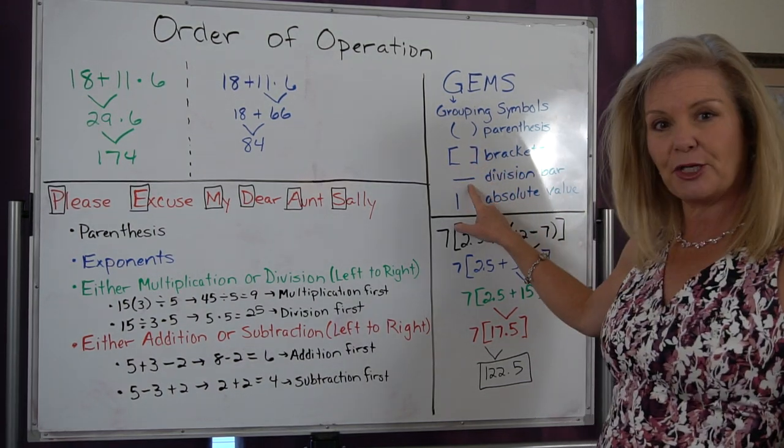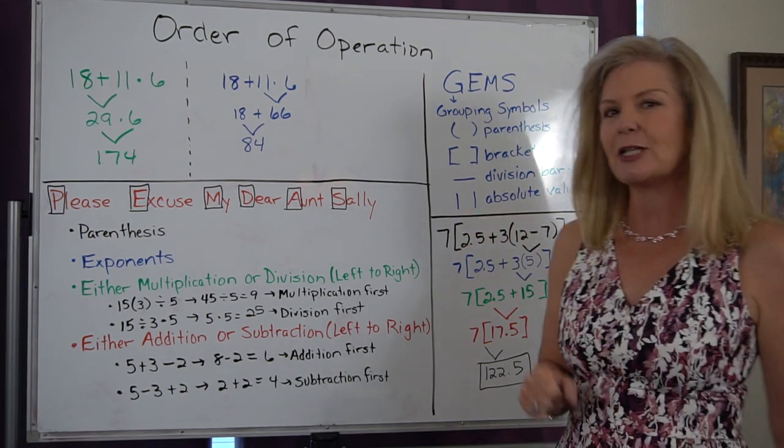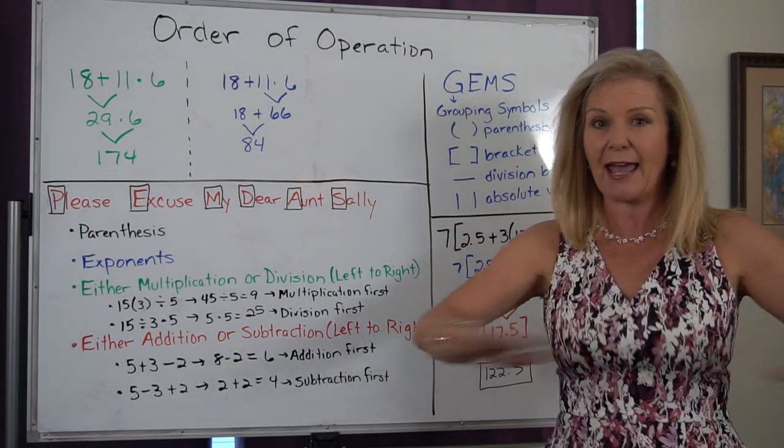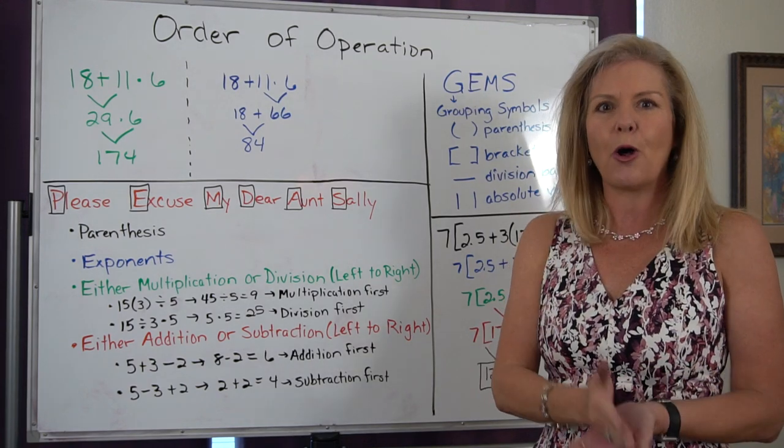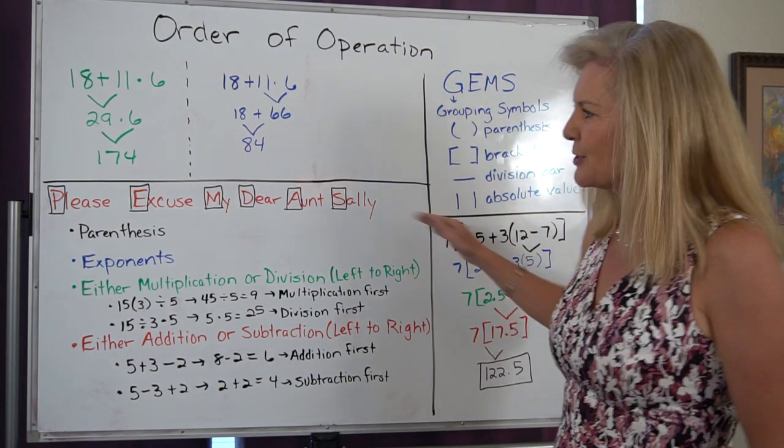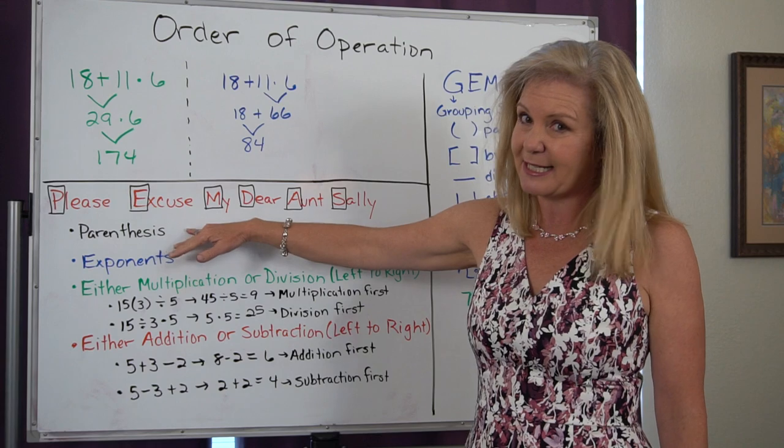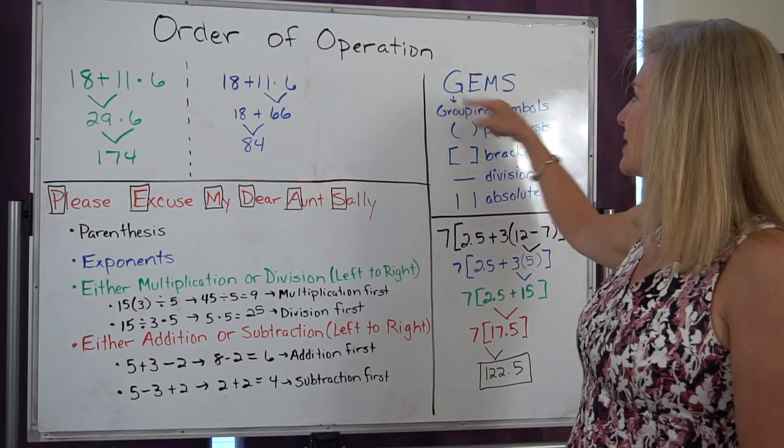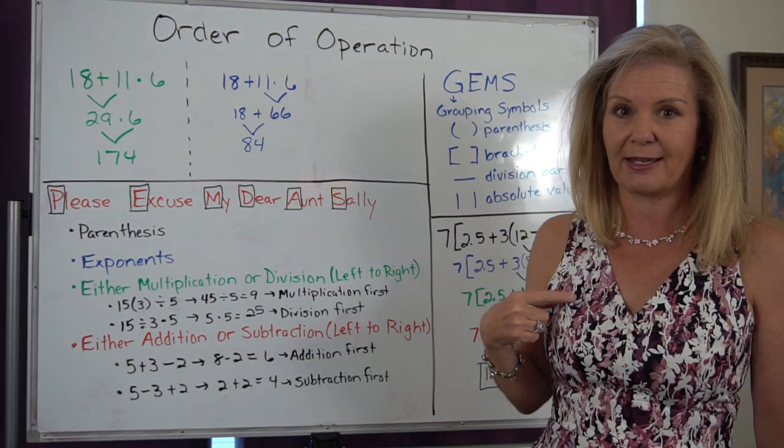We can have parentheses, but we can also have brackets. We can have the division bar and we can have something called absolute value. And if you ever see any of those symbols, you always have to do them first. So I've replaced Please Excuse My Dear Aunt Sally with GEMS, just so we can account for all the other symbols.